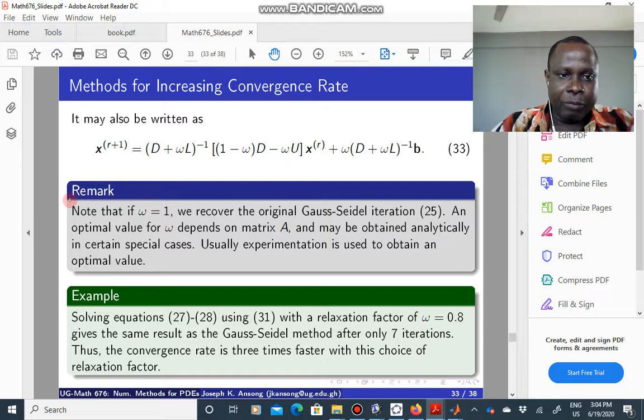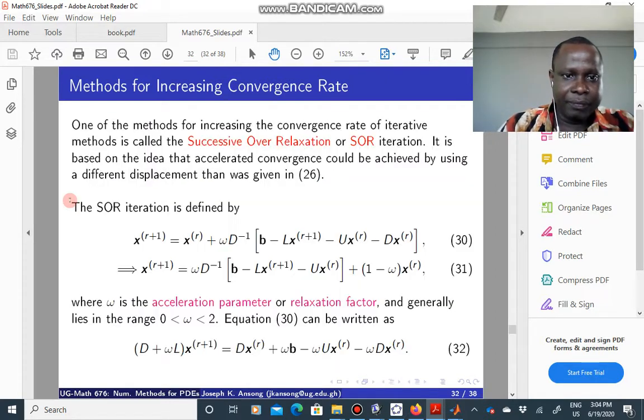Alright, so basically you can use the same code as for the Gauss-Seidel, and then all you do is multiply this displacement term here by this relaxation factor. Or if you like, once you have the code for SOR.